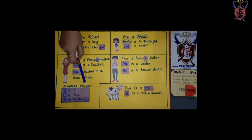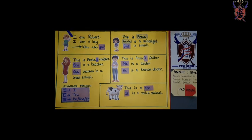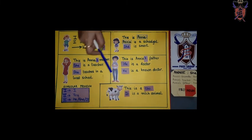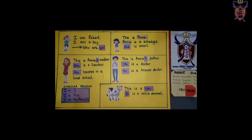So, singular pronouns korn se korn se hootate hai? Apeni naam ke jaga pey aap I use kar saktay ho. Kisii se baat kare ho, uske jaga pey aap you use kar saktay ho. Agar kisii tisre ke baare mein baat kare ho, Toh agar woh ladki hai toh she, ladka hai toh he, Aur animals, ya objects hoonge, toh it.